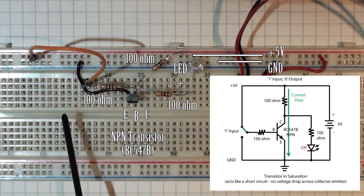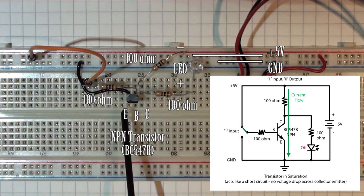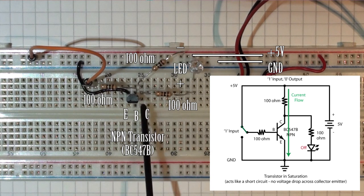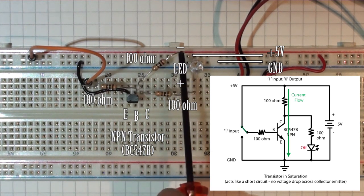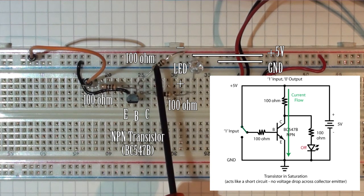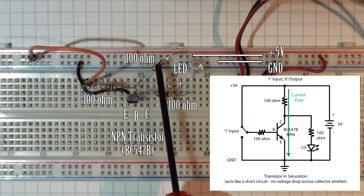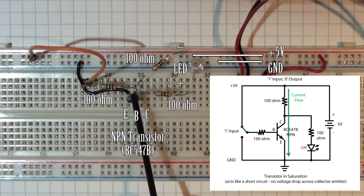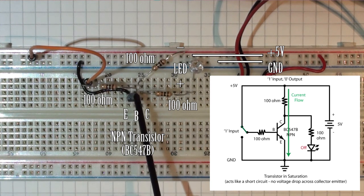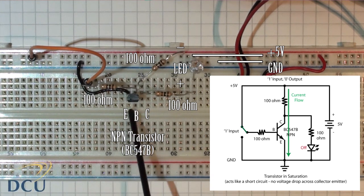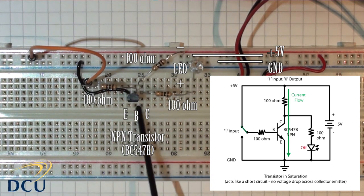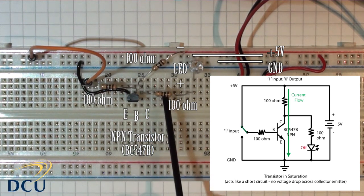In this case, our transistor is in saturation, meaning current flows freely between the collector and emitter. The current flows through the 100 ohm resistor from the 5 volt supply to the collector pin. Since the transistor is in saturation, it acts like a short circuit, and the current doesn't flow through the LED to ground.